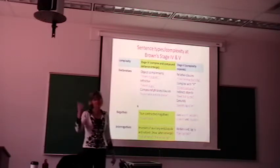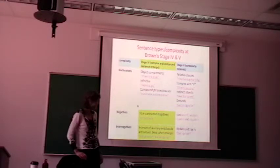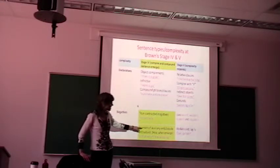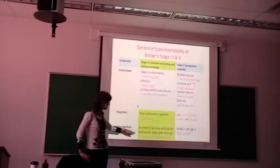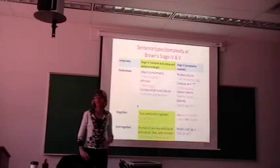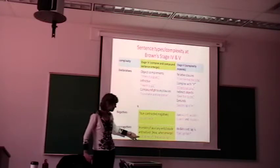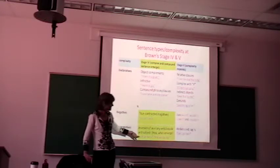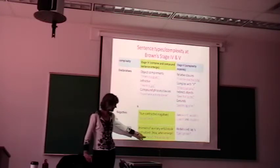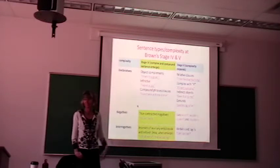The big change for interrogatives happens at stage 4. I know your book says 3, 4. Just memorize 4. And that's when they take that auxiliary verb, or the copula, and they put it at the beginning of the sentence. So they do what we call the interrogative reversal, and they put it before the subject. Instead of saying, that is mine, like a declarative, they say, is that mine? So that's the big change.